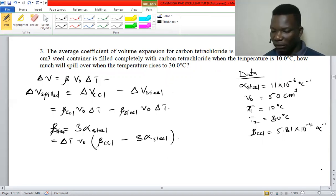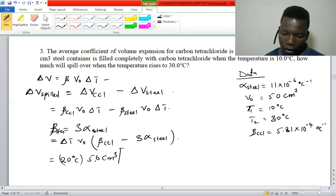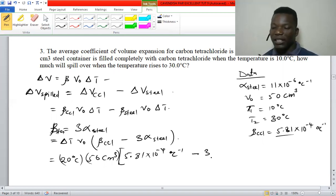Now we plug in the values. The change in temperature is 30 minus 10, which gives 20°C. The initial volume is 50 cubic centimeters. The coefficient of volume expansion for carbon tetrachloride is 5.81 × 10⁻⁴, minus three times the coefficient of linear expansion, which is 11 × 10⁻⁶.